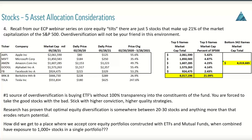The bottom 342 names in market cap equal the top five — there is a major bias in the S&P 500. Research on optimal equity diversification shows it's somewhere between 20 and 30 stocks, and anything more than that literally erodes your return potential. If you map your portfolios across an efficient frontier, you can see that as you continue to diversify, it can seriously erode your returns relative to risk. How did we get to a place where we accept core equity portfolios constructed with ETFs and mutual funds where combined equity holdings can expose you to more than 1,000 stocks in a single portfolio? I would challenge that.